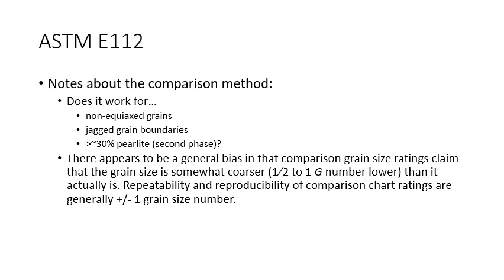A few notes about the ASTM E112 comparison method: we're not sure if it works well for non-equiaxed grains, grains with jagged boundaries, or microstructures with greater than 30% pearlite. We will use the method almost universally, and our study should give a better idea of how well it works for these non-standard microstructures. Studies have shown the comparison method tends to make grains look bigger — about half to one ASTM grain size number lower than counting methods. Repeatability and reproducibility of comparison chart ratings are generally good to within plus or minus one ASTM grain size number.